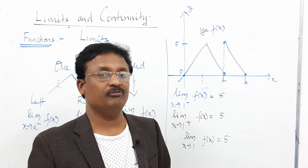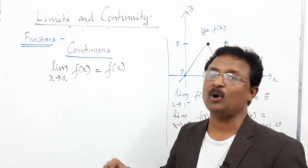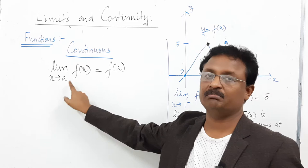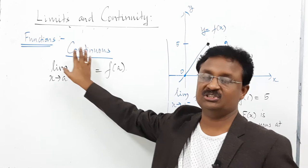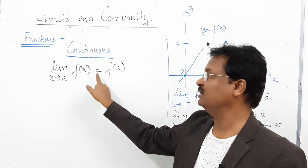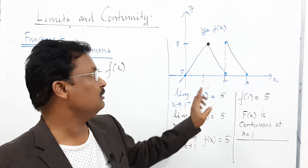Point three: continuity. When can we say a function is continuous at a point a? The condition is: lim x→a f(x) = f(a). That is, the two-sided limit must exist and equal the function's defined value at that point. For the two-sided limit, you must find both the left limit and right limit and confirm they are equal to f(a).